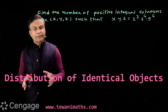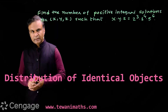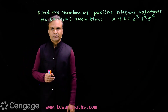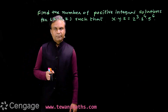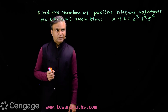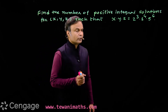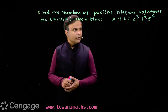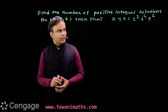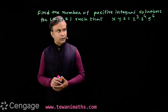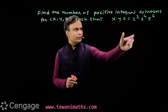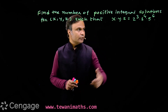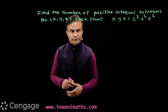Here we have a very interesting application of this concept. The question is: find the number of positive integral solutions for the triplet (x, y, z) such that the product x·y·z equals 2³ × 3⁴ × 5⁶. Here we have a value in the form of prime factorization, where 2, 3, and 5 are prime numbers.